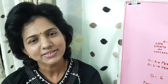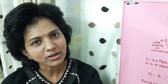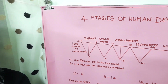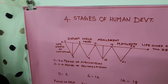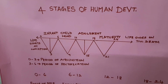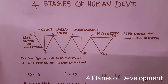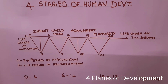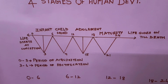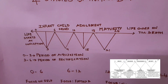Hi, this is Sureka. I am going to talk about four stages of human development, otherwise called the four planes of development, as given by Maria Montessori. She observed children over the age of 0 to 24 and developed this framework.